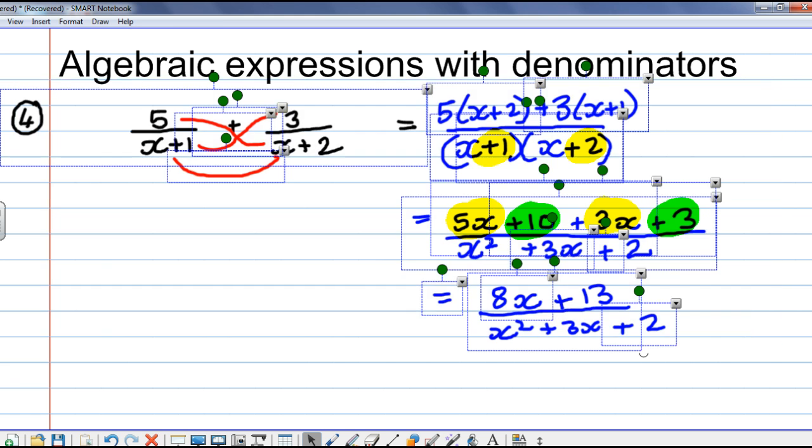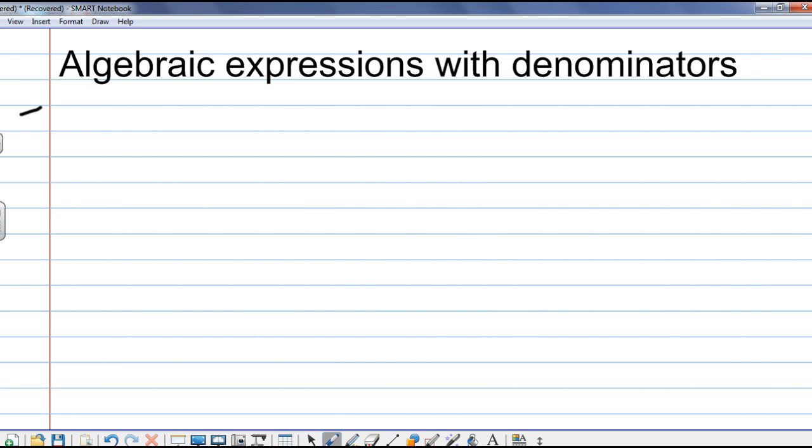Now, the last one we're going to look at is when we have expressions as the numerators. And I'm also going to throw in that complicator, a minus sign. Here, I'll show you what I mean. x plus 1 all over 7 minus x minus 2 all over 5. So, the easy part is the denominator. 7 times 5, 35.